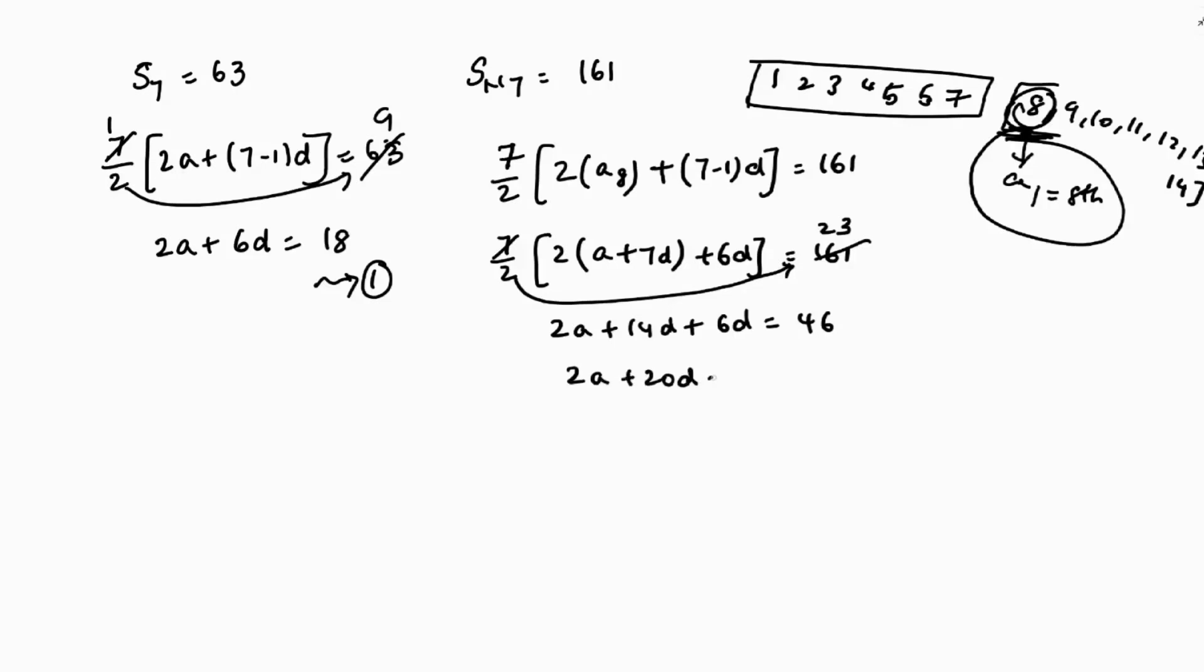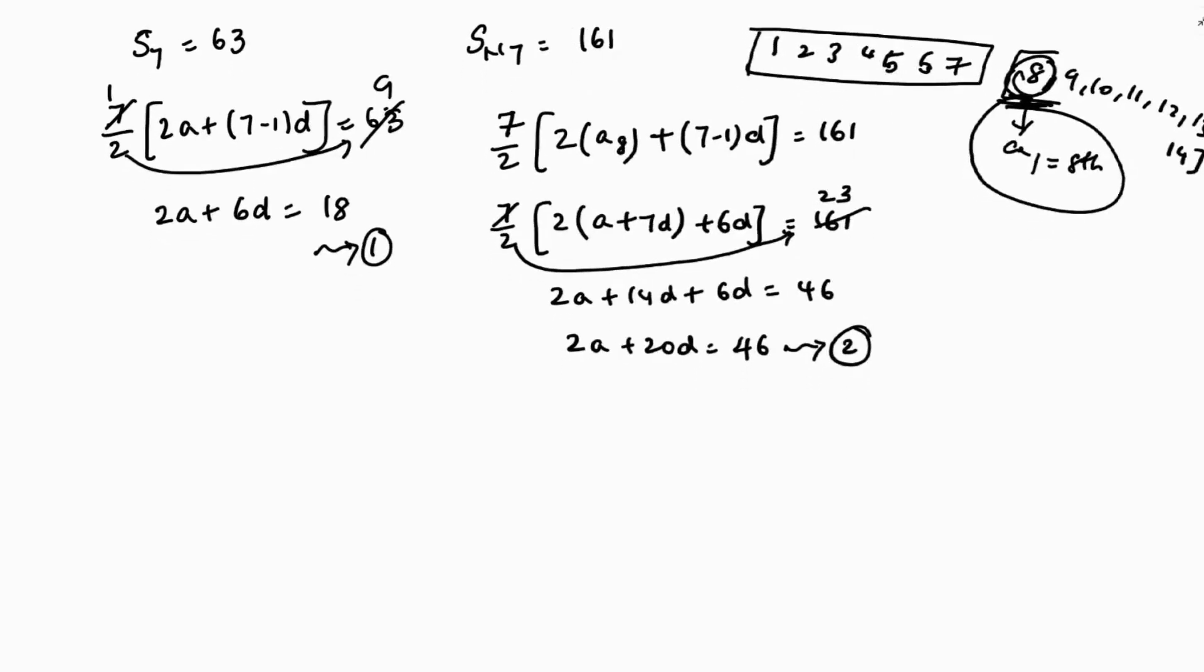So now 2a plus 14d plus 6d. This 2a plus 20d is 46, this is equation 2. Now if I solve both the equations, 2a plus 20d is 46, 2a plus 6d is 18. If you will subtract 14d is 28. D is 28 by 14, d is 2. So common difference is 2.